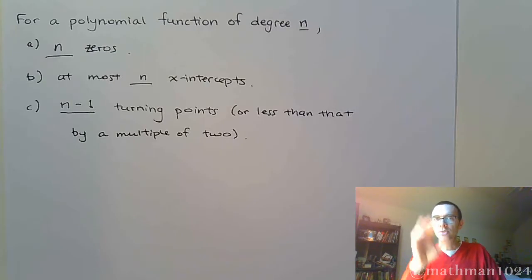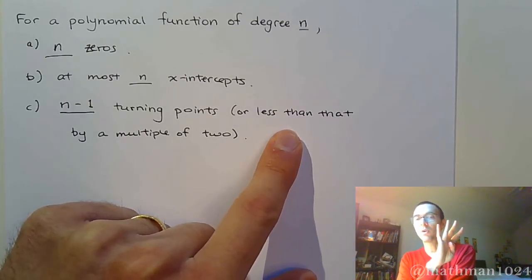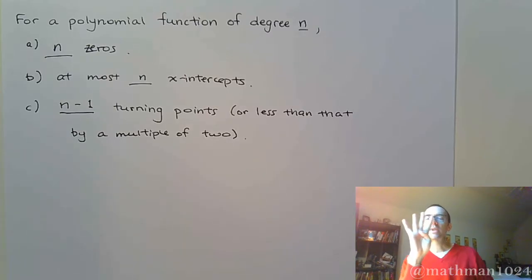The number of turning points for a polynomial of degree 5, you're going to have four turning points. Or, it says less than that by a multiple of 2. That means you're going to have four turning points, or two turning points, or you could have zero turning points.